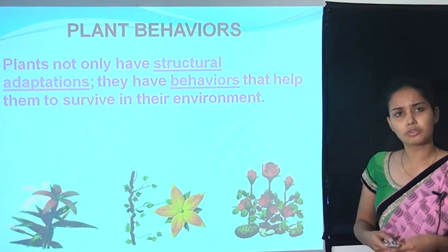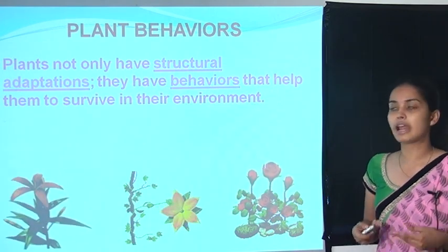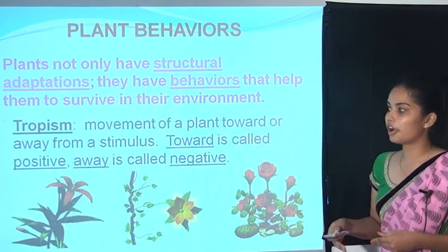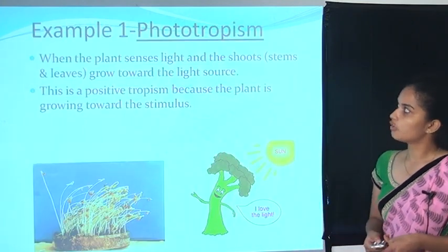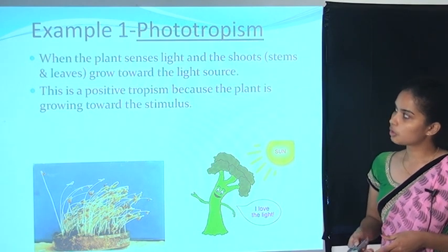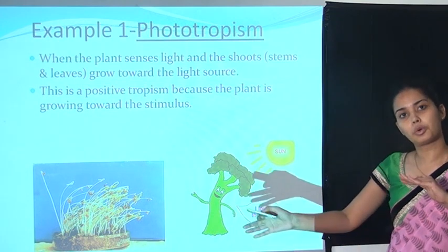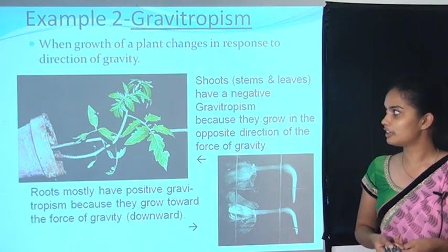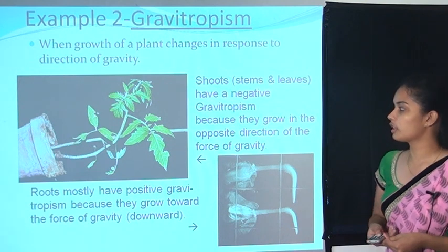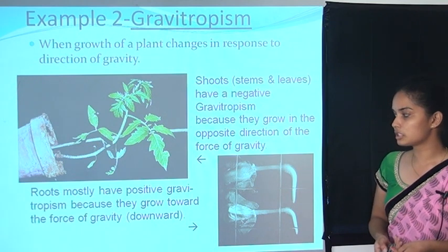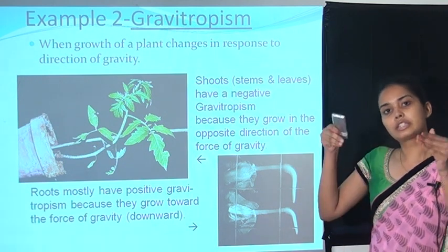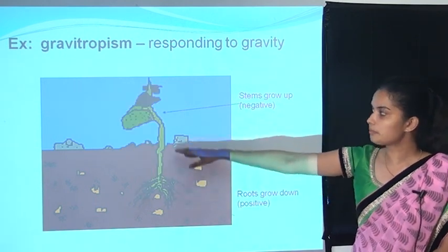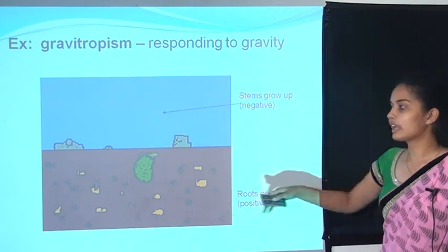Plant behavioural adaptations: plants have not only structural but also behavioural adaptations. Tropism is one — the movement of plants toward or away from a stimulus. Movement toward is called positive tropism; movement away is called negative tropism. Phototropism: when a plant senses light and the shoots grow toward the light source — this is positive tropism. Gravitropism: shoots have negative gravitropism because they grow opposite to gravity, while roots have positive gravitropism because they grow toward gravitational force.